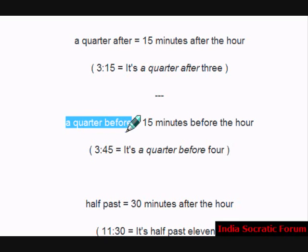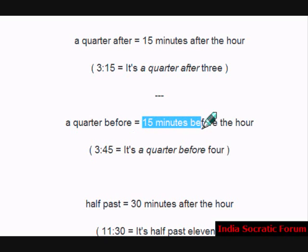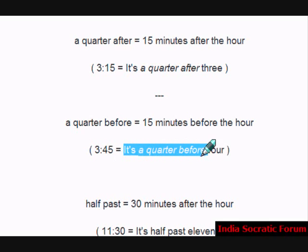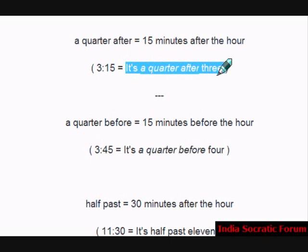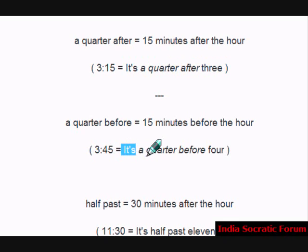A quarter before means 15 minutes before the hour, something like 3:45. We call it, it is a quarter before 4, because it is going to be 4 shortly.